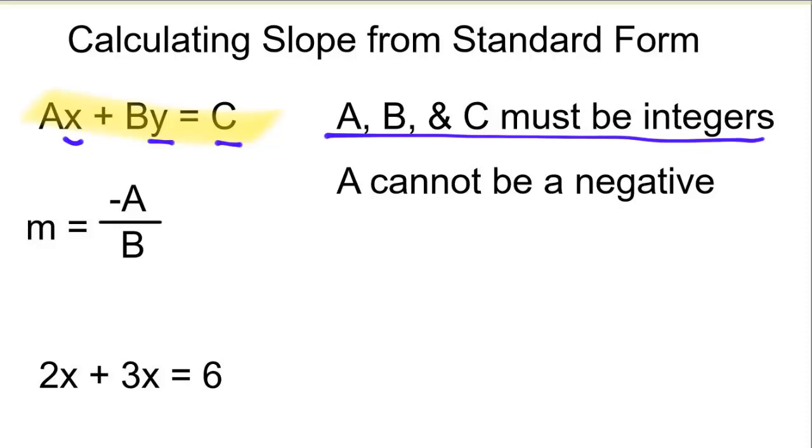Let's see, the first one is A, B, and C must be integers, meaning you can't have fractions and you can't have decimals. And the letter A, which is the leading coefficient, cannot be negative.